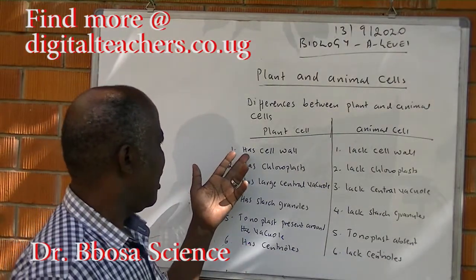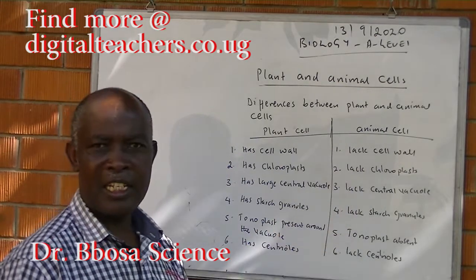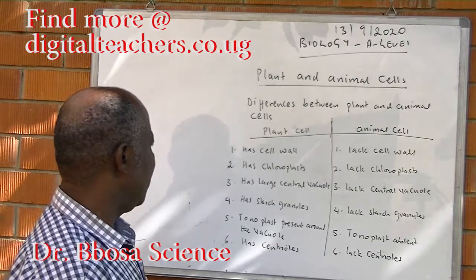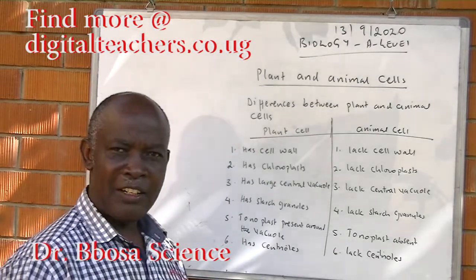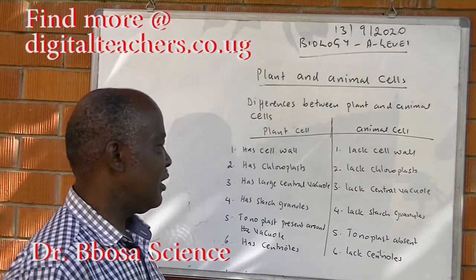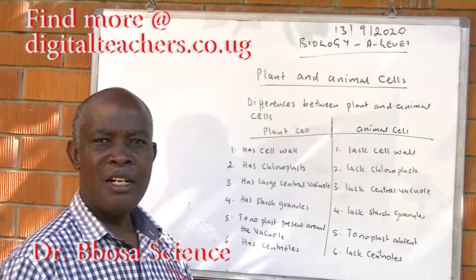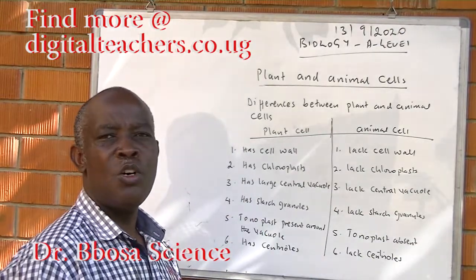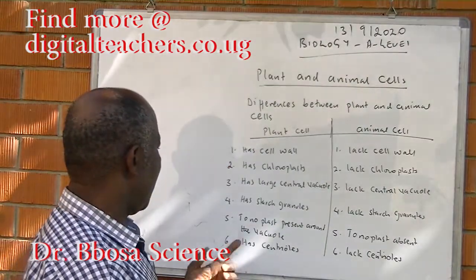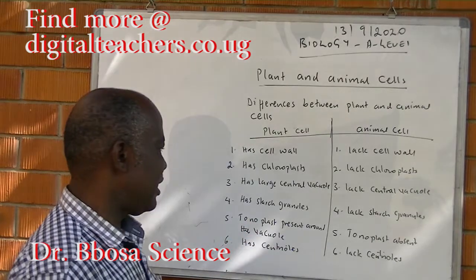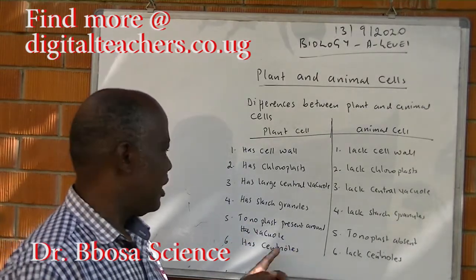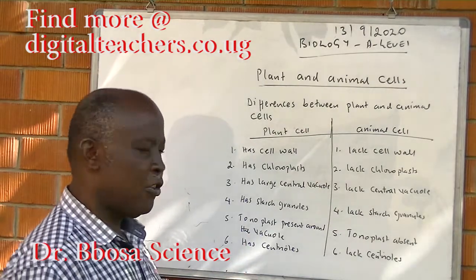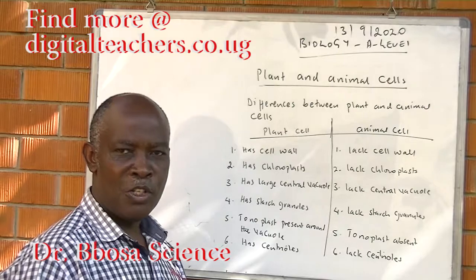Starchy granules are only found in plant cells and not animal cells. Differences between plant and animal cells: plant cells have cell walls while animal cells lack cell walls. Plant cells have chloroplasts while animal cells lack chloroplasts. Plant cells have large vacuoles; if animal cells have vacuoles, they are very small. Plant cells have tonoplasts — a membrane around a vacuole — while animal cells lack tonoplasts. Plant cells lack centrioles; animal cells have centrioles.